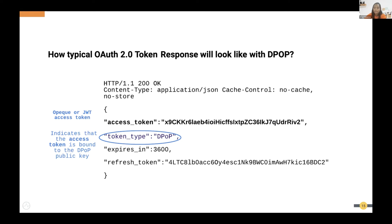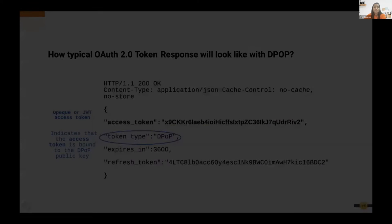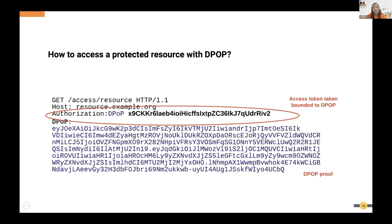The access token can be an opaque access token or a JWT. When calling a resource with this access token, instead of using 'Authorization: Bearer <token>', you put 'Authorization: DPoP <token>' and additionally send a newly generated DPoP as a separate header parameter. Once you do this call, you will get the resource back as the response.